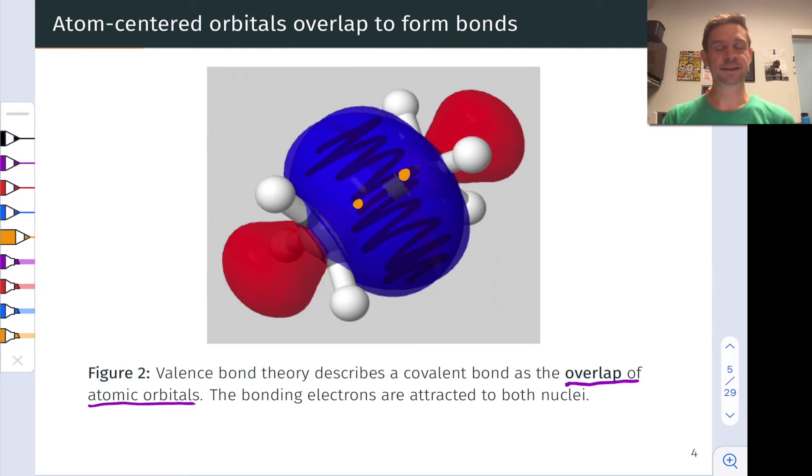But for the time being, the key idea for valence bond theory is that bonds arise from the overlap of adjacent atomic orbitals, atomic orbitals located on linked atoms that are relatively close to one another.